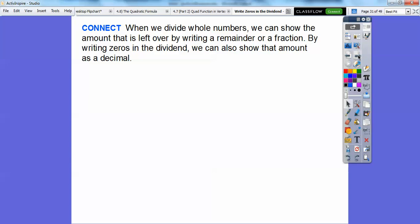When we divide whole numbers, we can show the amount that is left over by writing with a remainder or writing it as a fraction. I'll show you in just a bit what I'm talking about. By writing zeros in the dividend like we just did, we can also show the amount as a decimal.